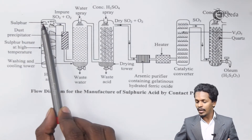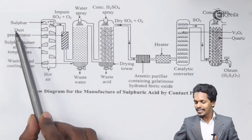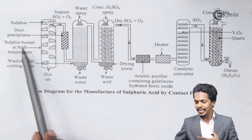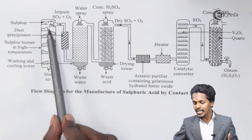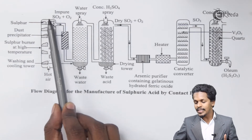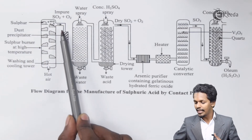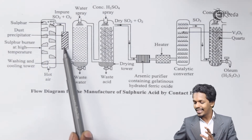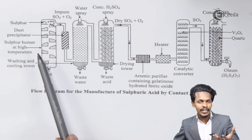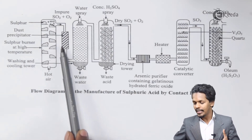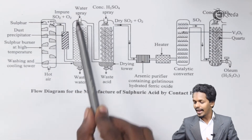In the flow diagram, Sulfur reacts with Oxygen to form Sulfur Dioxide. The Sulfur burns at high temperature, converting into SO₂. This SO₂ gas, along with O₂, passes through a dust precipitator. There is also a passage of hot air to convert further Sulfur into Sulfur Dioxide, and the gas flows through the dust precipitator as part of the purification process.